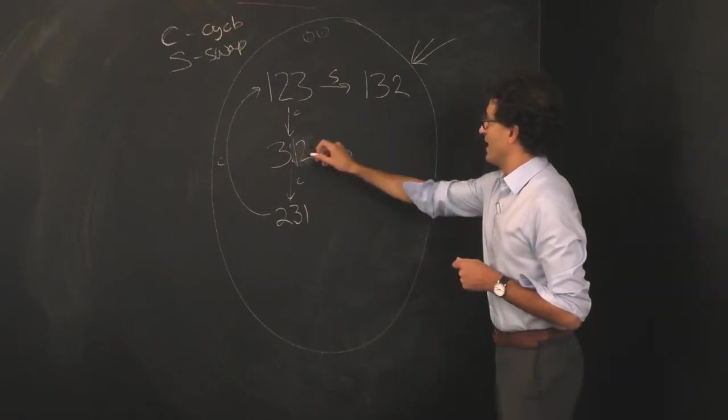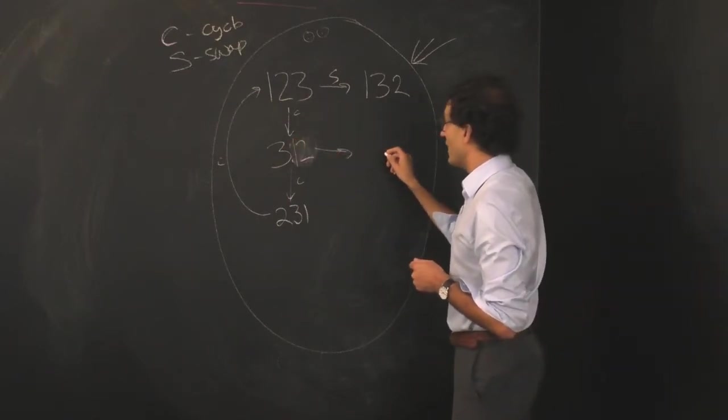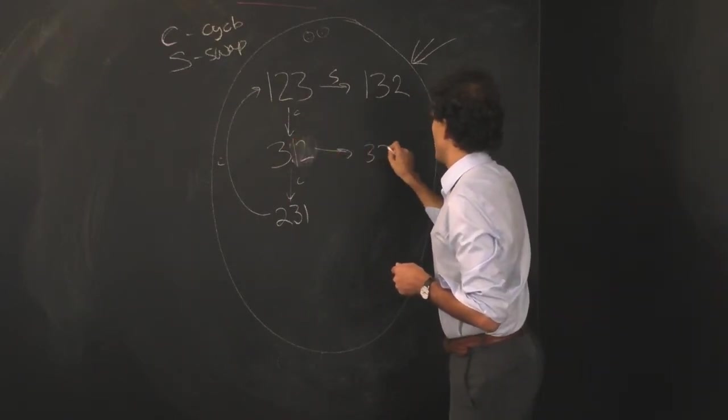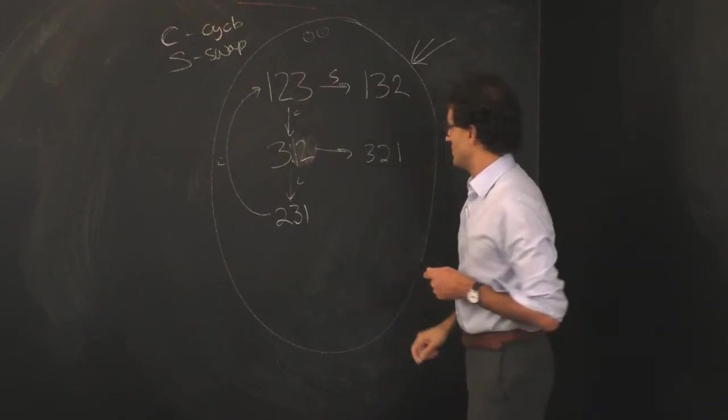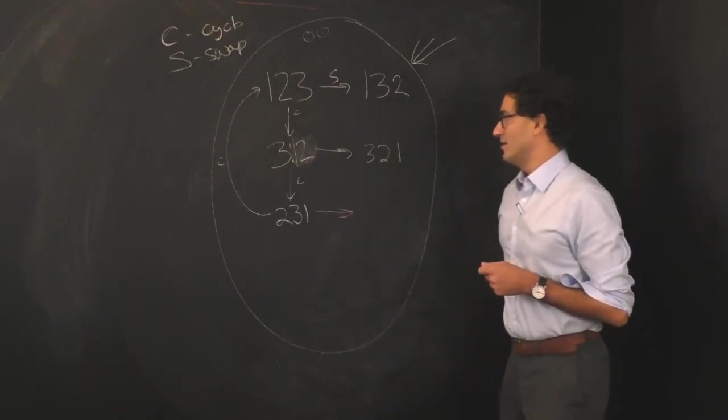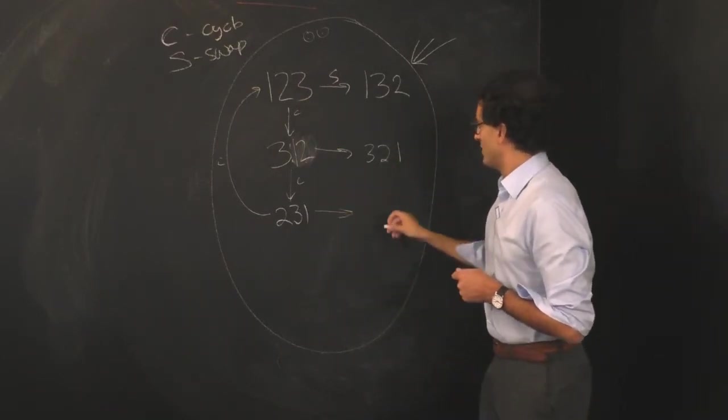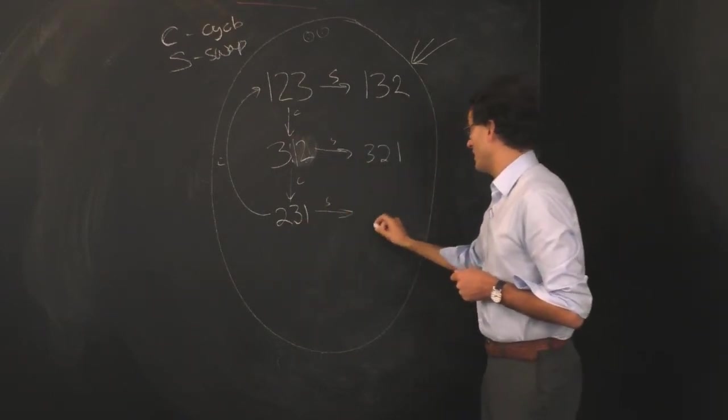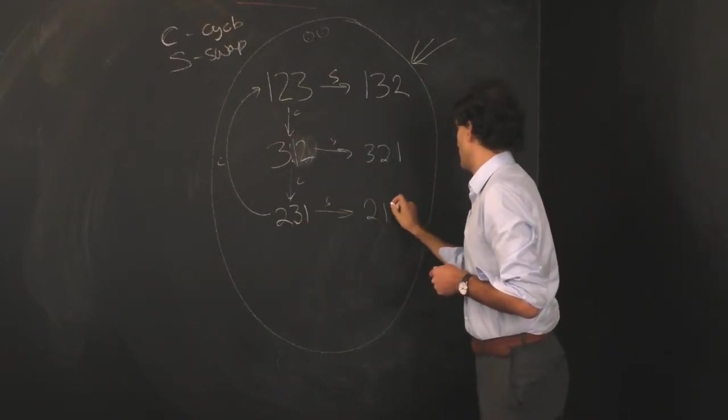Here it is for the three, two, one state. It becomes three, one, two. And then here, in this case, the swap operation on two, three, one becomes two, one, three.